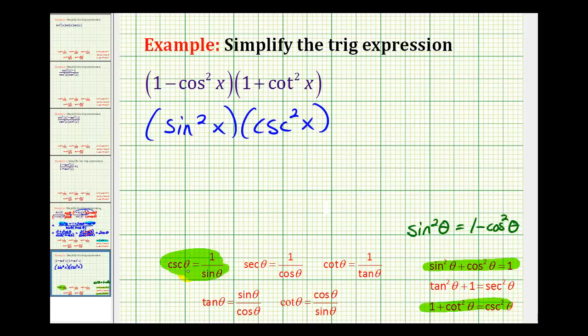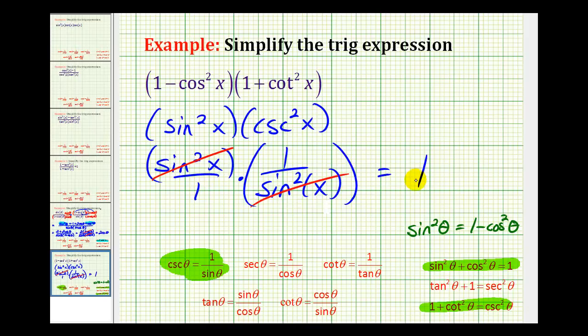So we'd have sine squared x over 1 times, this is the same as 1 over sine squared x. And now these factors of sine squared x simplify out, and all of this simplifies to 1.